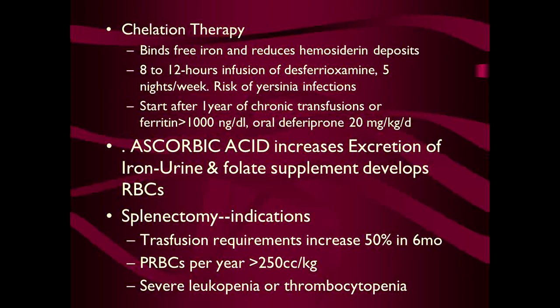The oral drug deferiprone 20 mg/kg/day is an alternative to desferrioxamine. Ascorbic acid causes increased iron excretion in the urine, so advise the patient to use foods containing vitamin C. Folate supplements help in development of RBCs. When transfusion requirements become more frequent, splenectomy is indicated — specifically when transfusion requirements increase 50% in 6 months, PRC transfusions exceed 250 cc/kg per year, or there is severe leukopenia or thrombocytopenia.